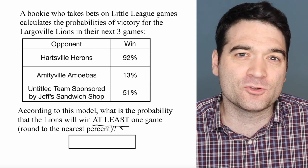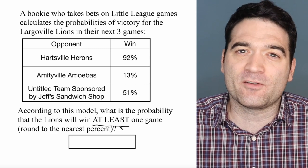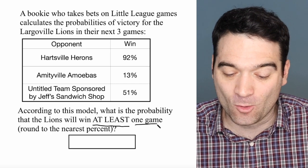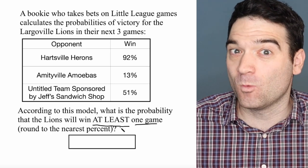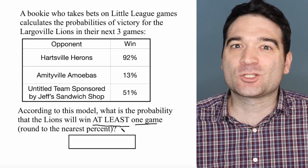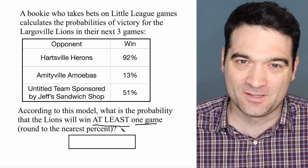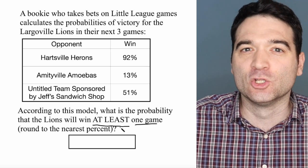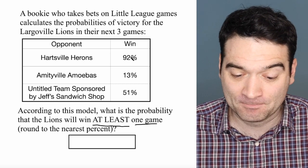A much simpler way to approach this is to ask: under what scenario do they not win at least one game? There's only one case where they don't win at least one game, and that's where they lose all of their games. So what's the probability that they lose all of their games? We can calculate that.